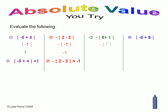Number three: six plus one is seven. The absolute value of seven is seven, but the negative outside the bar stays there, so the answer is negative seven. And number four: negative eight plus nine is one. The absolute value of one is one, so the answer to this problem is one.